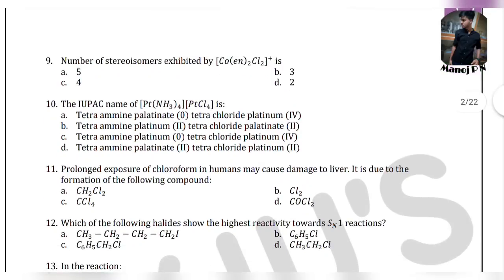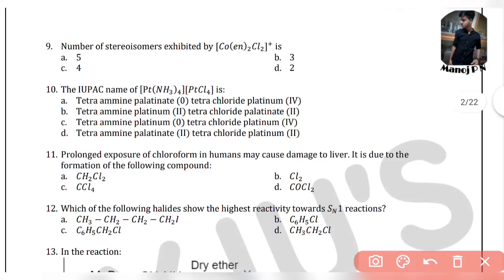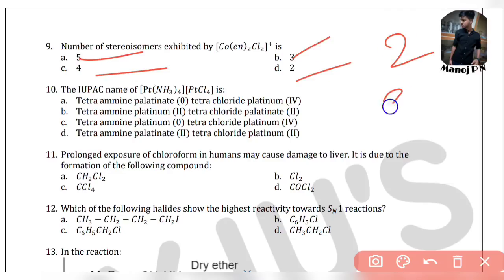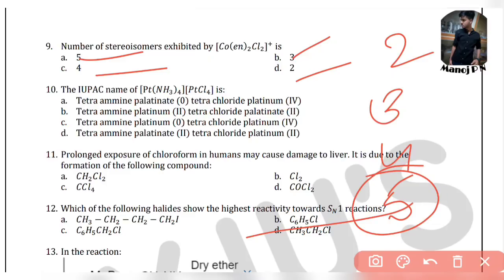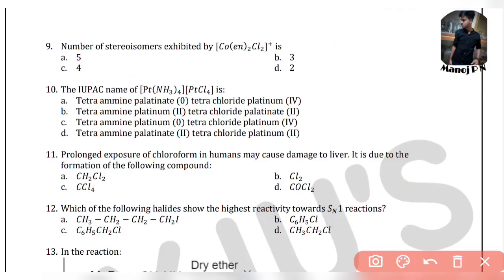Question 9: the number of stereoisomers exhibited by [Co(en)2Cl2]Cl+. The options are 5, 3, 4, and 2 — these are sequential numbers. Using the trick for this type of question, the answer is option B, which is 3.